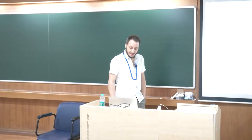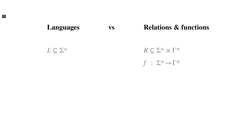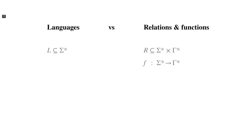If you want to contrast this with the classical setting of language theory, a language is a set of strings. You can see it as a particular case of a function that maps a string to either the string 0 or the string 1.